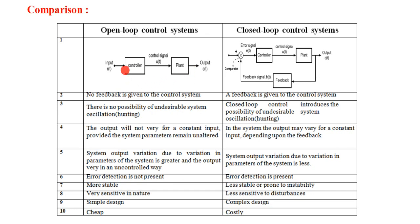That is the block diagram of open loop and closed loop control systems. The second point: no feedback is given to the open loop control system — you can see there is no feedback. But in the case of closed loop control system, a feedback is given to the control system.